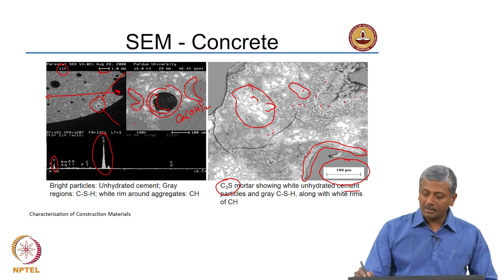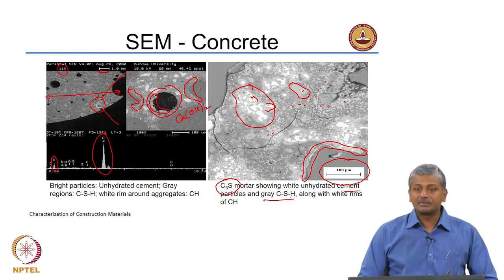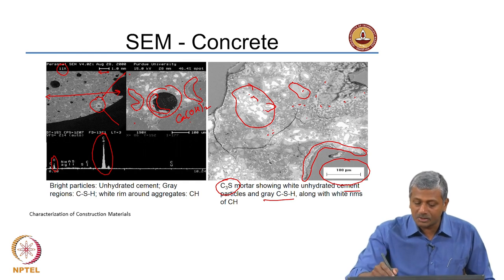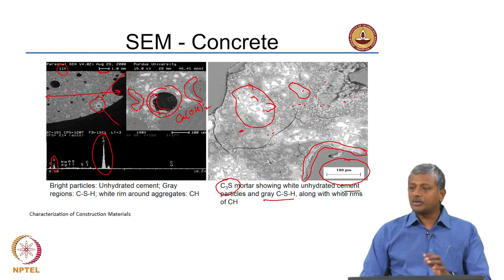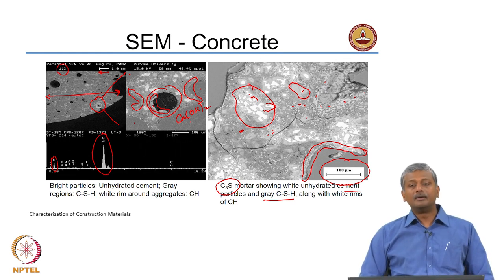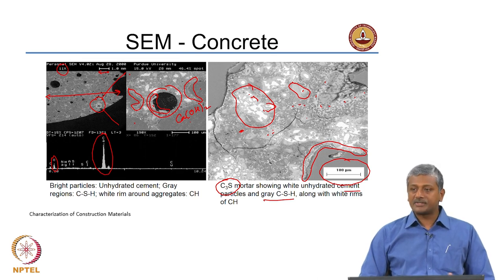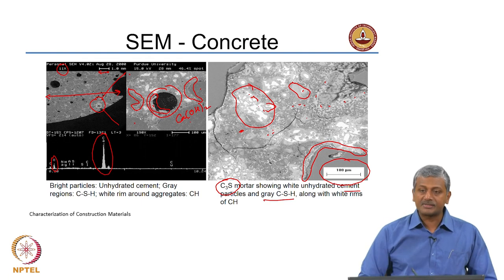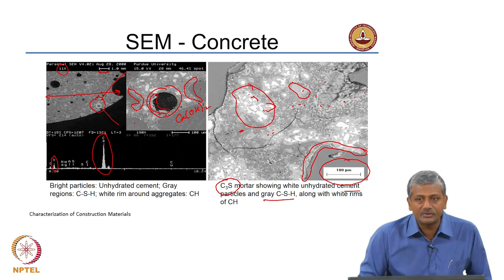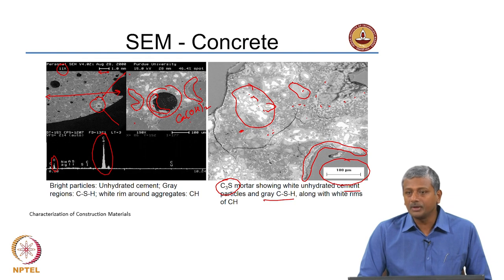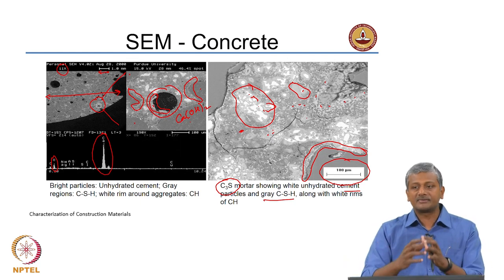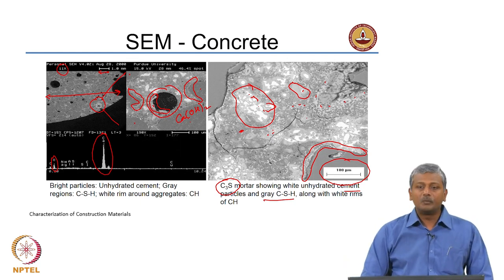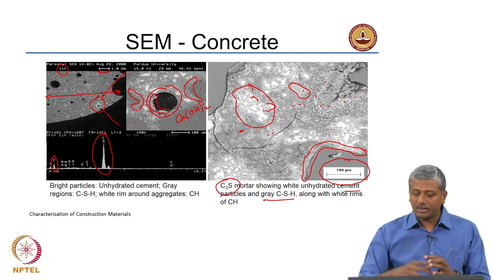You can see the cement particles which are white, and different grey levels of the inner CSH and the outer CSH. The outer CSH appears darker because it has much greater porosity. Inner CSH is denser because it is forming right on the surface of your C3S. Outer CSH is formed by dissolution of the cementitious particles, and in that process a lot of porosity is entrapped within the structure of the outer CSH, whereas inner CSH is much denser.